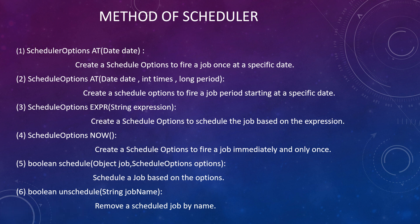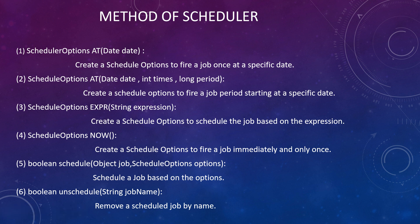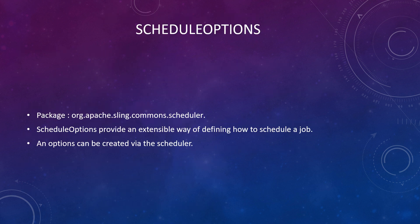If you have already scheduled a job and want to unschedule it, you can use the unschedule method. This unschedule method requires a job name. But the scheduler doesn't have a built-in method to set the name, so you need to manually create code for defining the name. That's why they introduced the concept of ScheduleOptions.